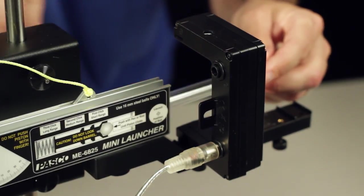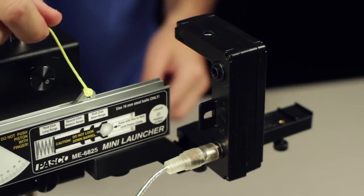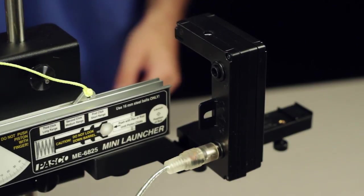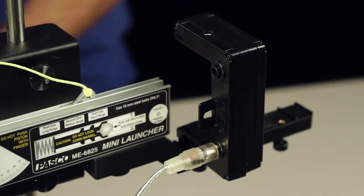Finally, configure your data collection system to use Photogate timing to measure the speed of your projectile as it passes through the 1.5cm SmartGate beams.